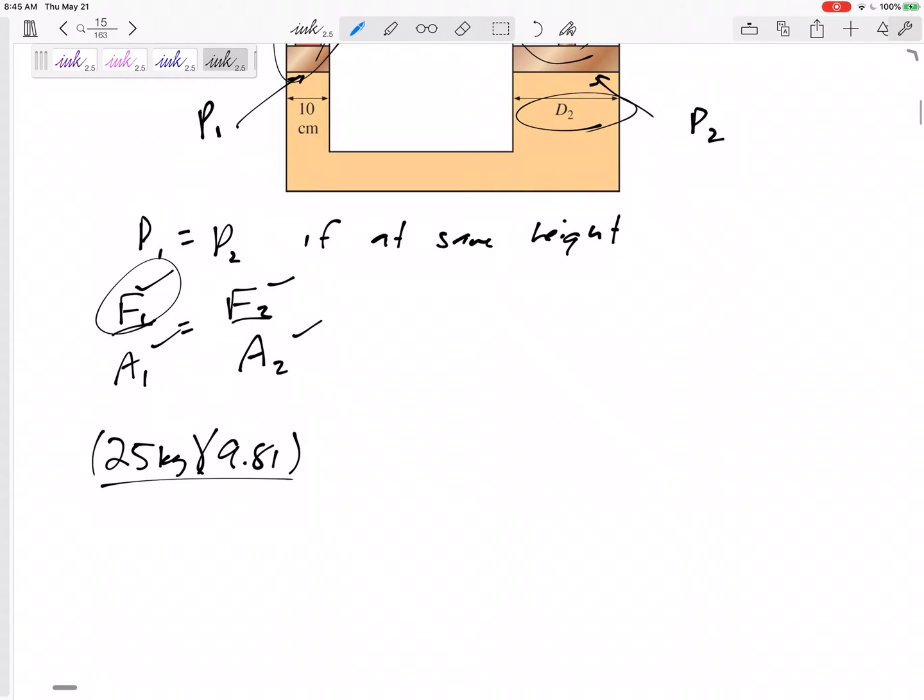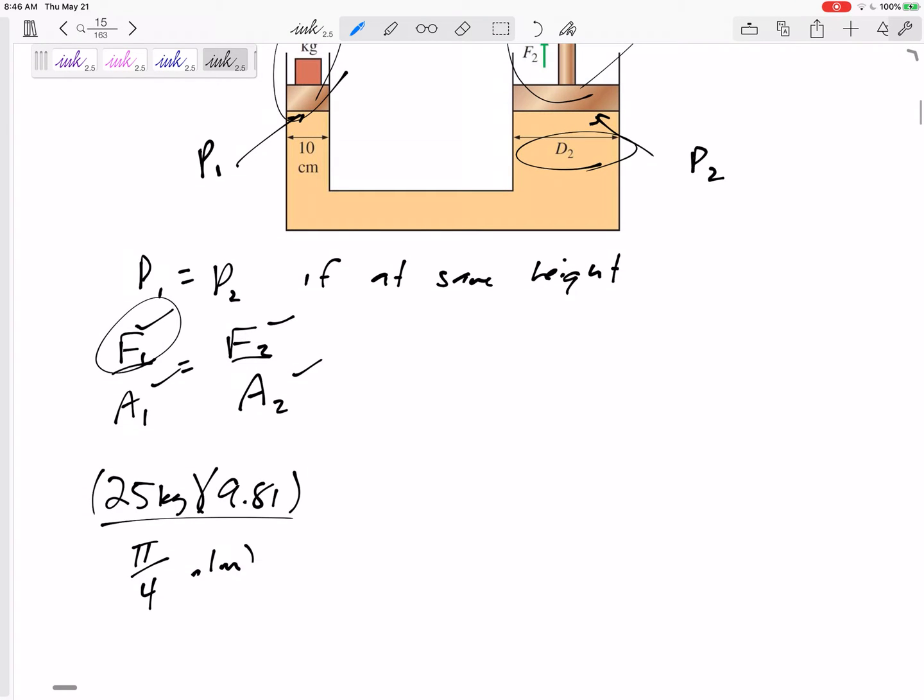Divided by the area, pi r squared or pi by 4 diameter squared. I'm going to change that to 0.1 meter and don't forget to square it. This equals force 2, the 2500 kilograms times 9.81.